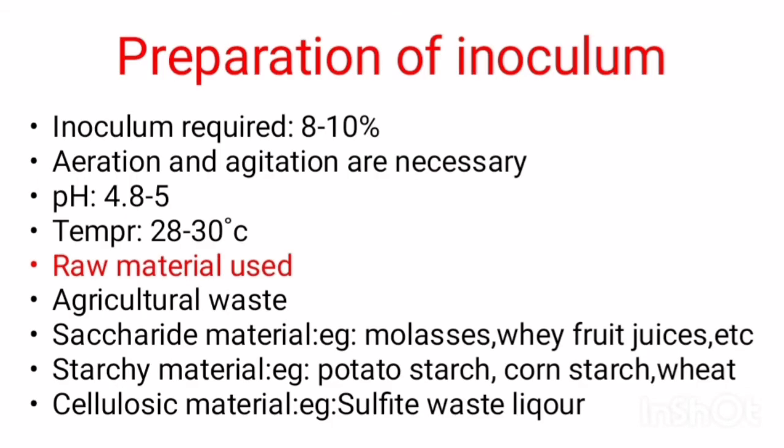Next, we can discuss about preparation of the inoculum and raw materials used. The percentage of inoculum required for the production is 82%. It also requires aeration and agitation. The optimum pH required for the fermentation process is 4.8 to 5 and the temperature is 28 to 30 degrees Celsius.